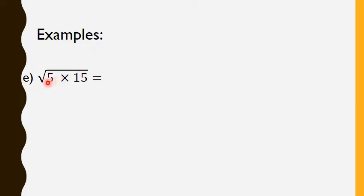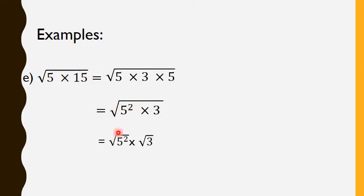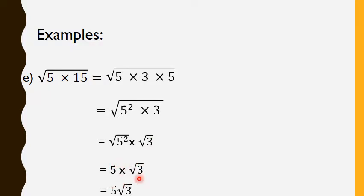Now this example: radical 5 times 15. We can say that 15 comes from 3 times 5. So, radical 5 times 15 equals to radical 5 times 3 times 5. Now, 5 times 5 is 5 squared. So, radical 5 squared times 3. We apply the rule: equals to radical 5 squared times radical 3. Radical 5 squared is 5, and we keep radical 3. So, 5 times radical 3 equals to 5 radical 3.